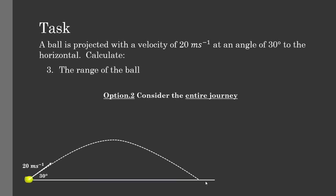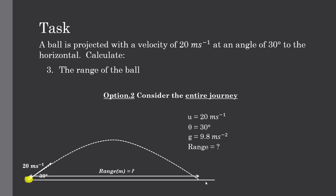Option two: consider the entire journey in one step, with an initial speed of 20, angle of 30, and gravity of 9.8m per second squared. The equation is range = u² sin(2θ) / g. Substituting our values also gives us 35.3m as our range — a quick way to calculate range directly.